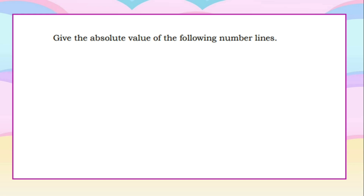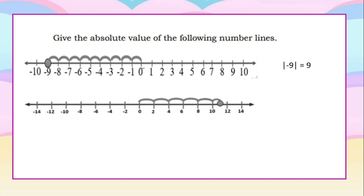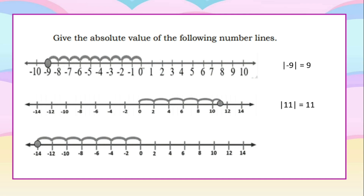Now let's read the absolute value from number lines. In the first example, from the origin, the point is 9 units to the left, representing negative 9. Therefore, the absolute value of negative 9 is 9. In the second example, the number line uses intervals of 2: 2, 4, 6, 8, 10. The point is between 10 and 12, therefore it is 11. The absolute value of 11 is 11. For the last example, the point is to the left of 0, representing negative 14. The absolute value of negative 14 is 14 — that is 14 units from 0.